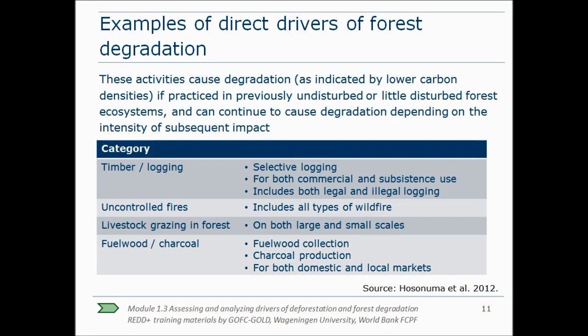For example, note that timber and logging activities are here categorized as a degradation process. The underlying idea is that when a forest is logged and after a while starts to regrow again, the land use does not change and it remains a forest — so here we talk about a degradation driver. When a forest is logged and the cleared land is converted into agriculture, then the process would be categorized as commercial agriculture in this framework. Other studies might consider logging as a driver of deforestation instead.